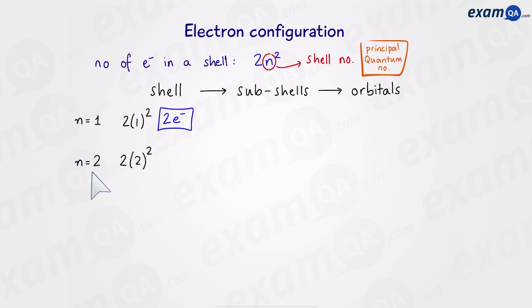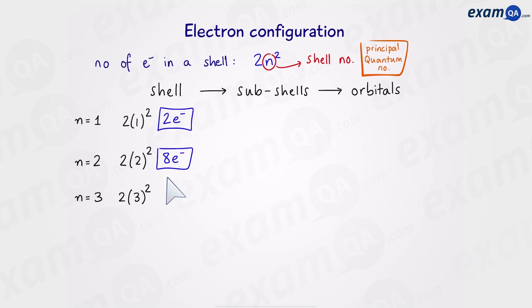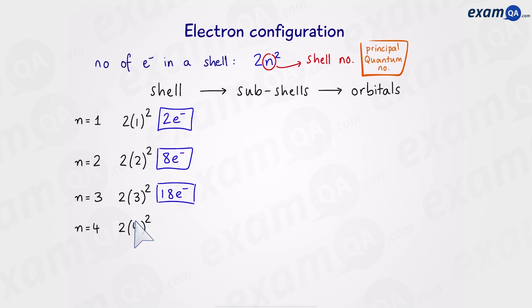When n equals 2, in the second shell we have 2 × 2² which gives us 8 electrons. Here's where things get a bit different. When n equals 3, we have 2 × 3² which is 18 electrons. And finally when n equals 4, we have 2 × 4² which is equal to 32 electrons. So as the shells get further away from the nucleus, they can hold more electrons.